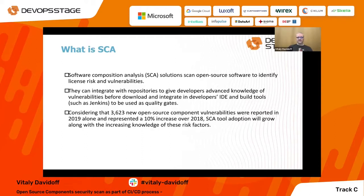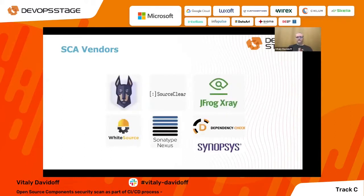So what is Software Composition Analysis? SCA tools can scan open source software to identify vulnerabilities, license risk, or integration problems. There are a lot of vendors in the market in this area, like JFrog X-Ray, Veracode SourceClear, Snyk, WhiteSource, and others. We even have OWASP Dependency-Check as a free open source tool for SCA. I will provide my opinion about using open source free tools versus paid vendors later.